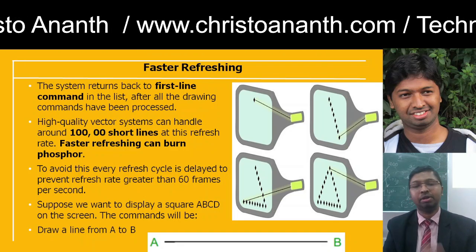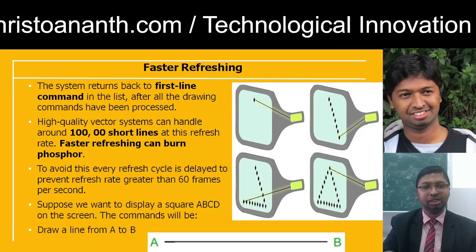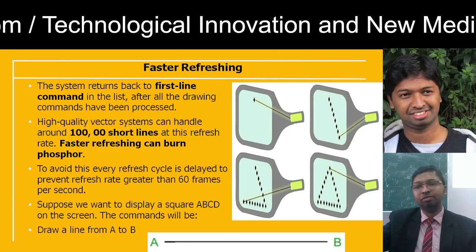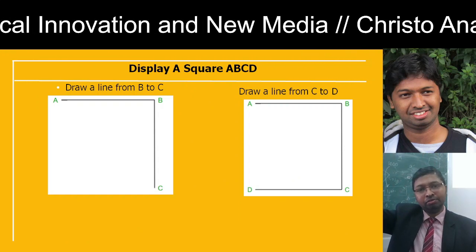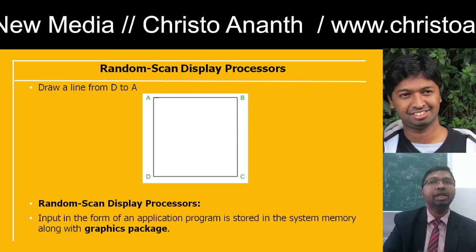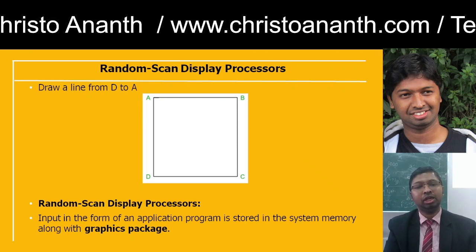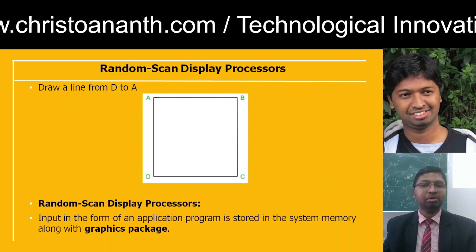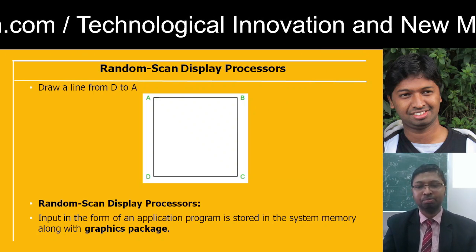For example, to display a square ABCD, the commands would be: draw a line from A to B, draw a line from B to C, then C to D, then D to A. This is how the drawing proceeds. Random scan display processors store picture definitions in system memory along with the graphics package.